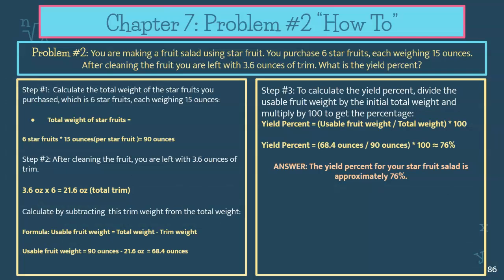The next problem, number two: you are making a fruit salad using star fruit. You purchase six star fruits, each weighing 50 ounces. After cleaning the fruit, you're left with 3.6 ounces of trim. What's your yield percent? You're going to go back to your triangle, which has EPQ divided by APQ times yield percent. In this situation, you have the information to put the EPQ over the APQ, and it will give you the yield percent.